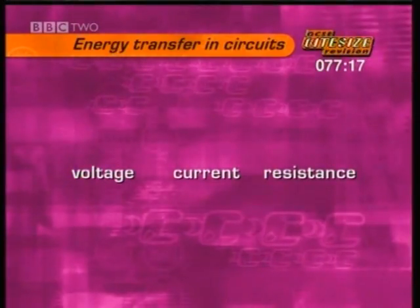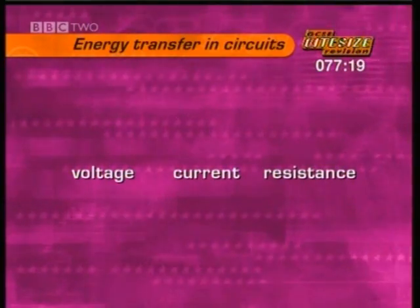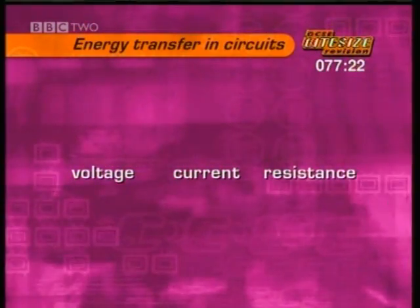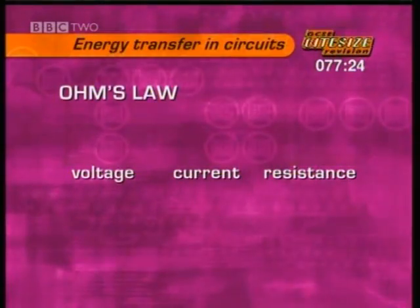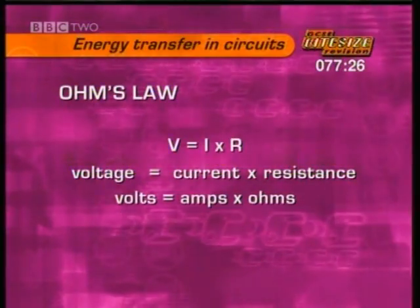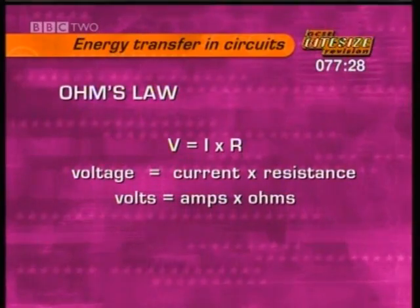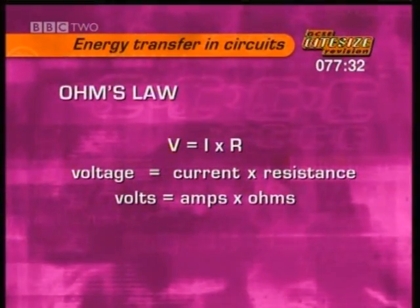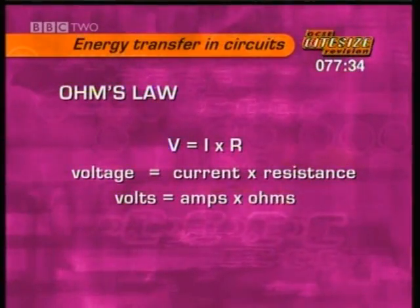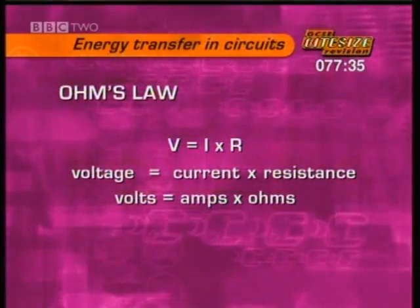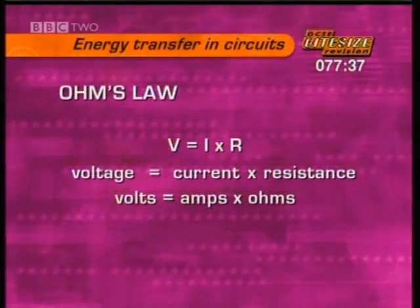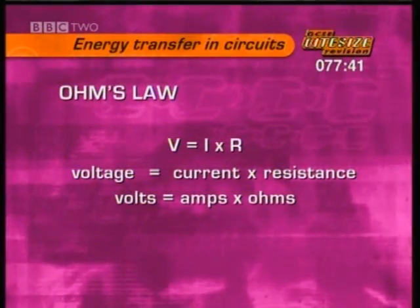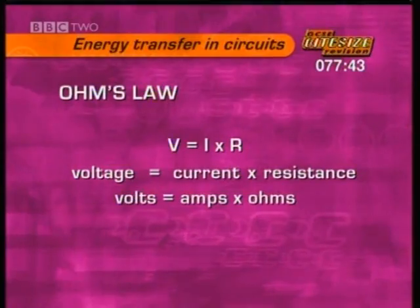In the Foundation Physics program, we saw that there's a special relationship between voltage, current, and resistance in a circuit, called Ohm's law. Ohm's law says that anywhere in a circuit, V equals I times R, where V is the voltage across a component in volts, I is the current going through the component in amps, and R is the resistance of the component in ohms. If you know any two of these values, you can work out the other one.